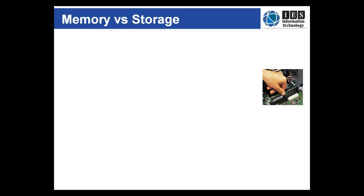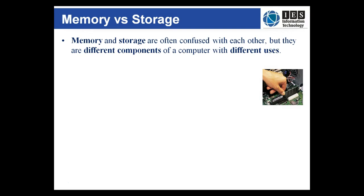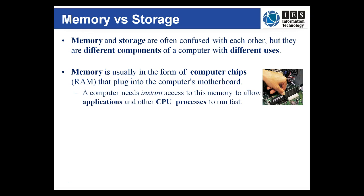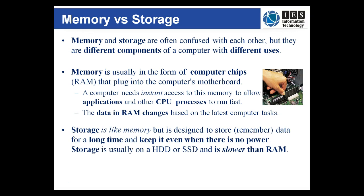So what's the difference between memory and storage? They're often confused with each other, and the use of flash and solid state devices only serves to blur the line between them. But they do have different roles inside the computer. Memory usually takes the form of computer chips like RAM or the CPU that plug into the computer motherboard. The computer needs almost instant access to memory to allow the CPU to process everything quickly. The data in RAM changes often, and when the power goes off the data is lost and cannot be retrieved unless it's stored somewhere else.